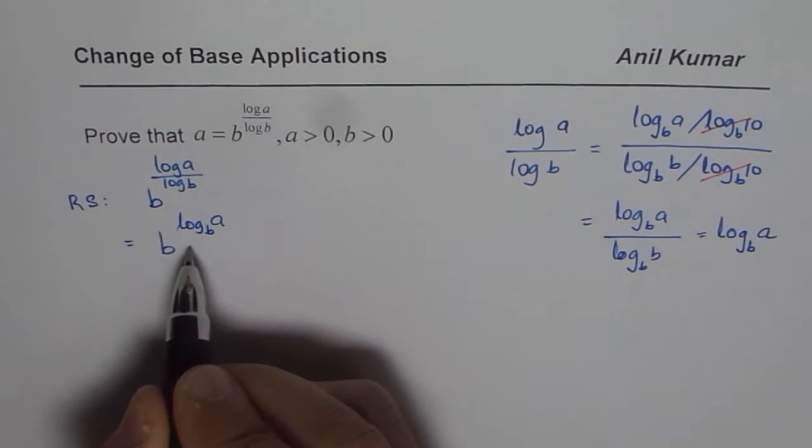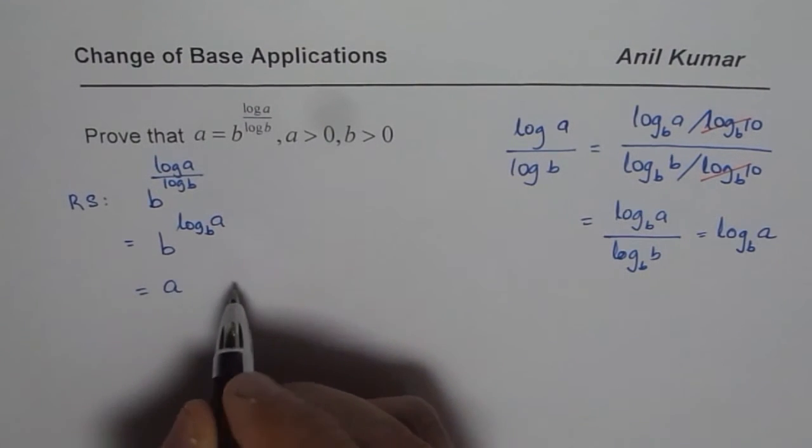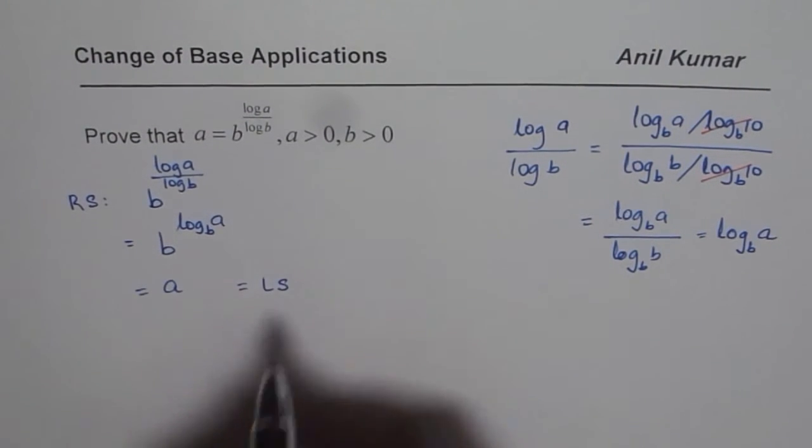Now as you know, B to the power of log B of A is indeed equals to A, which equals the left side.